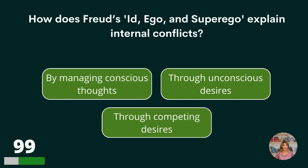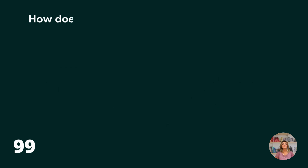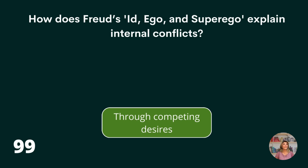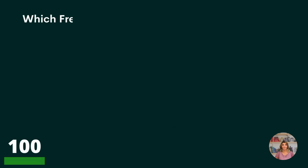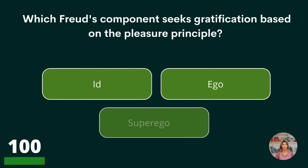How does Freud's id, ego, and superego explain internal conflicts? By managing conscious thoughts, through unconscious desires, or through competing desires? Through competing desires.